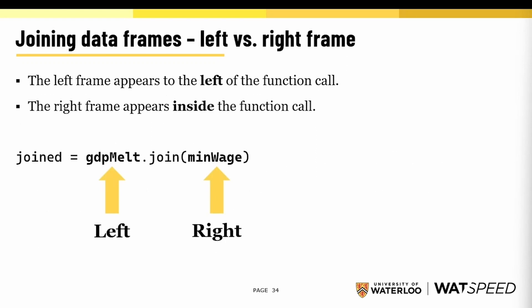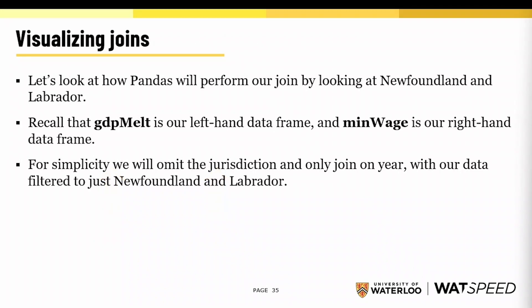So how can you tell which is the left-hand dataframe and the right-hand dataframe? The left dataframe always appears to the left of the join function call, and the right-hand dataframe appears inside of the function call. This is probably starting to sound a bit abstract, so let's take a step back and see how Pandas will perform our join.